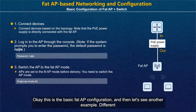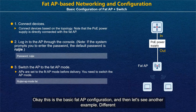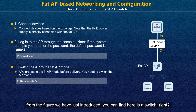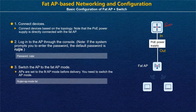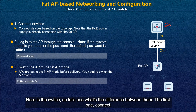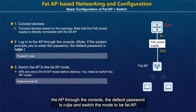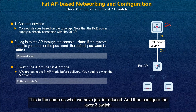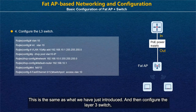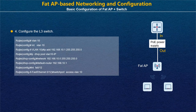This completes the basic FATAP configuration. Now let's see another example with a layer 3 switch added to the topology. The first steps — connect devices, login via console (default password: 'ruijie'), and switch to FATAP mode — are the same. The difference is that we now configure the layer 3 switch.